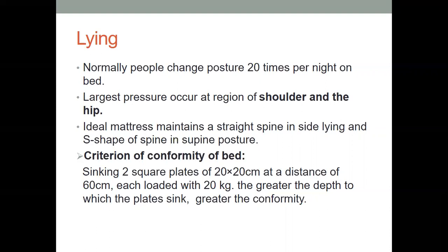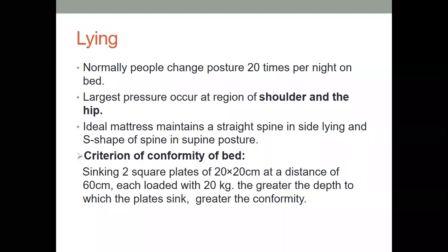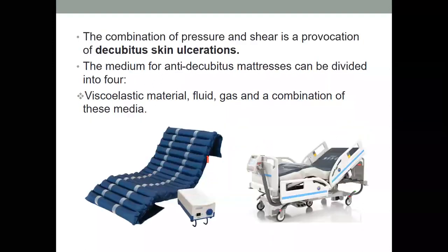The mattress should not be very hard nor very soft — a firm mattress is recommended. During side lying, the spine should be straight; during supine lying, it should be S-shaped. Your thoracic and buttock area can sink in, but if the lumbar area also sinks, lumbar load will increase. Different materials of mattresses are used — fluid, gas, and viscoelastic materials — which prevent pressure sores.